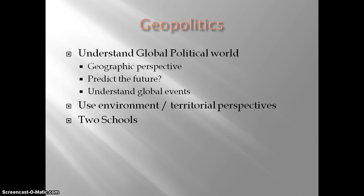We also use geopolitics to understand global events in terms of why things are happening, because many events in our world today are not isolated incidents occurring in a vacuum. They occur because of an accumulation of events, aggravations, history, and tension between people. It bothers us as humans if we can't organize and categorize and understand things, so we use global geopolitics as a way to create additional explanation for events in our world.